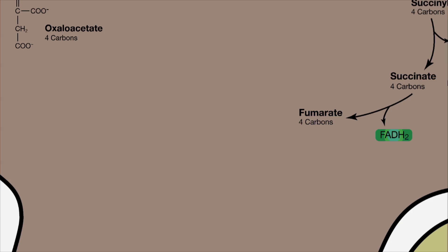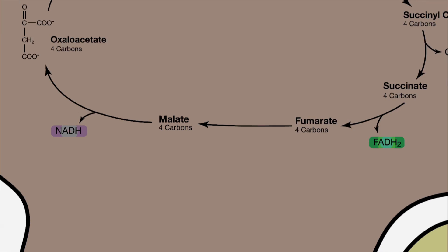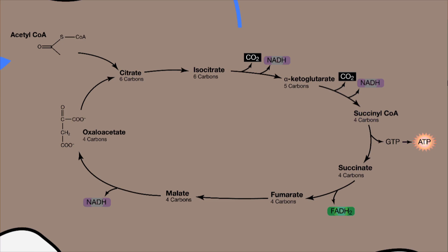After a couple more steps, this four-carbon structure is modified to form oxaloacetate, in the process creating another NADH. The citric acid cycle ends here, as this oxaloacetate is the four-carbon starting material. Overall, the citric acid cycle creates two ATP via substrate-level phosphorylation, two FADH2, and six NADH per every glucose molecule broken down in glycolysis.